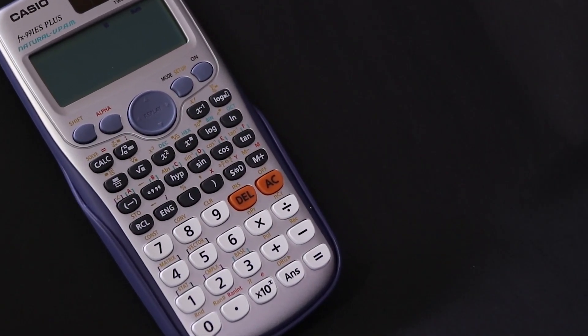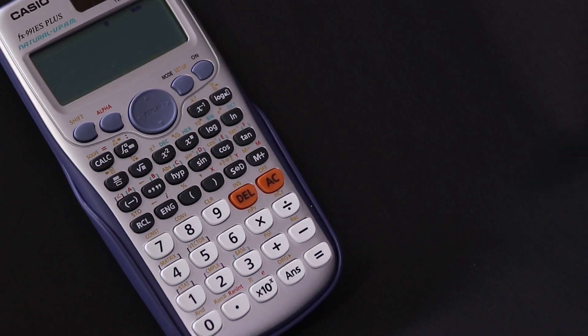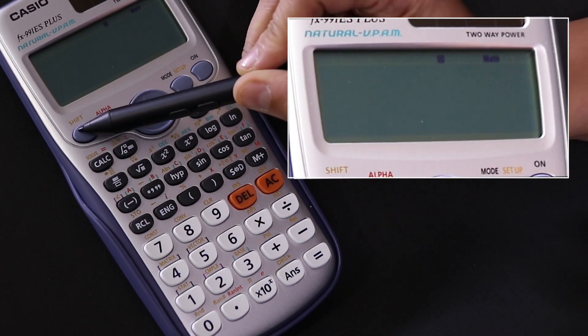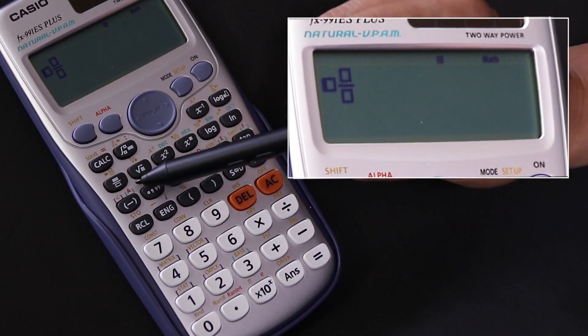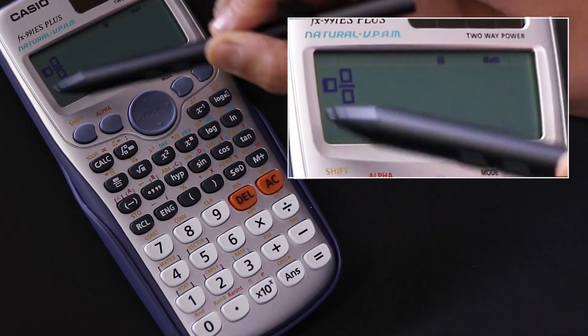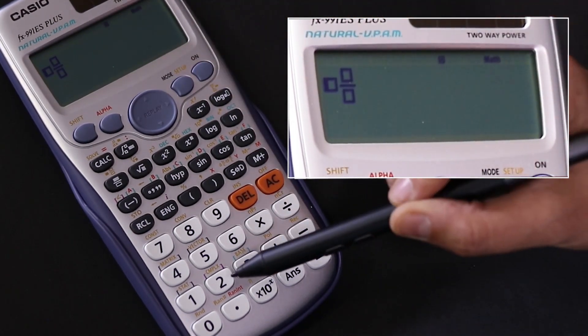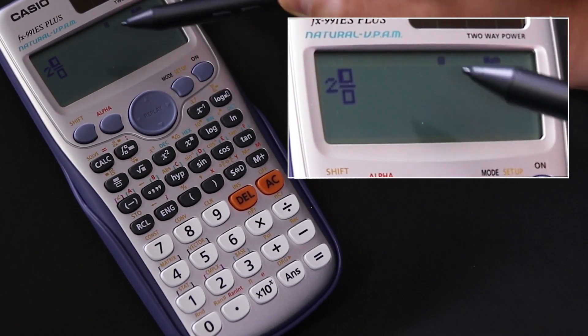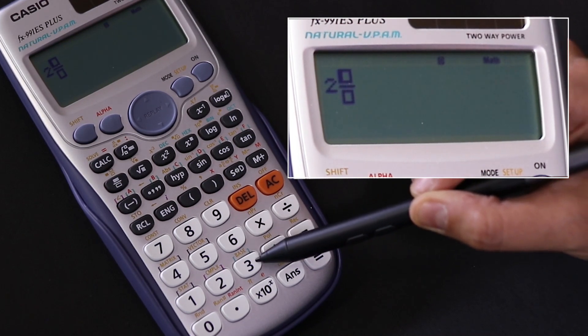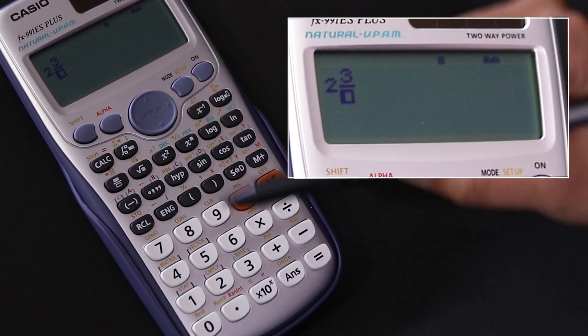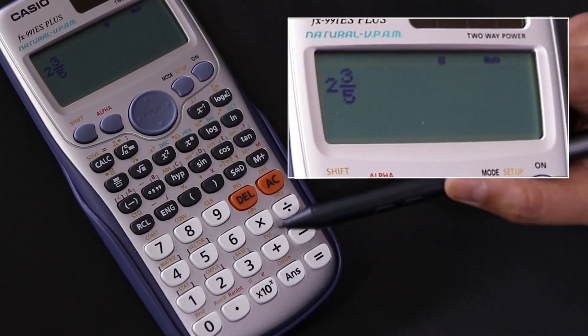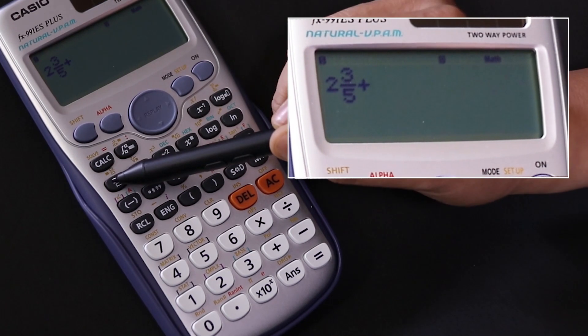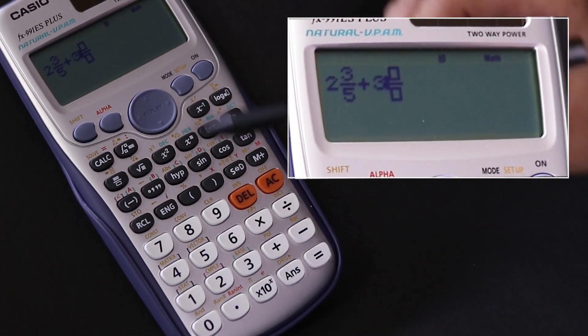To check our answer for 2a, we will input into the calculator 2 and 3/5. To do that, press shift and then this fraction button, which makes it a mixed number combination. So we have a 2, then arrow to the right so it goes to that box, we put 3, then arrow down, then 5, then arrow to the right, and then press plus. Then again, since we're putting a mixed number, shift fraction, then we type 3, arrow to the right, 1, arrow down, 2.